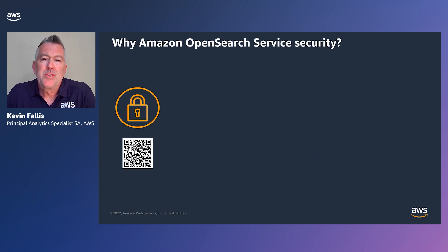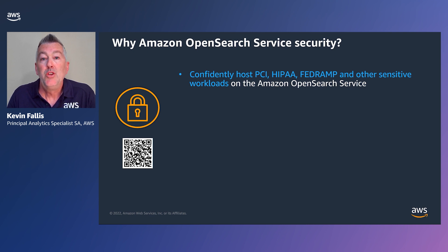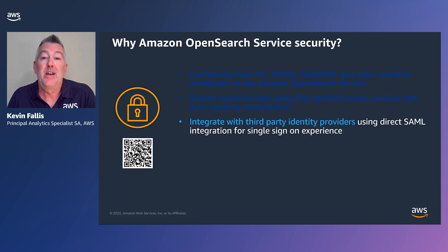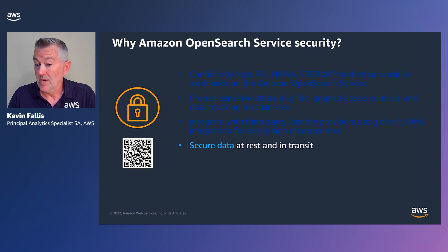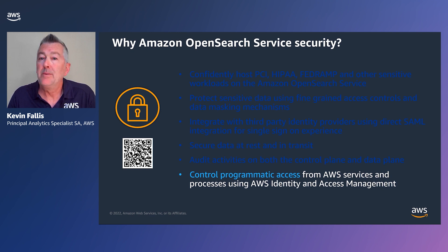So why Amazon OpenSearch service security? First of all, you can confidently host PCI DSS, HIPAA, FedRAMP, and other sensitive workloads on the Amazon OpenSearch service. You can protect sensitive data using fine-grained access control and data masking mechanisms. You can integrate with third-party identity providers for direct SAML integration for a single sign-on experience. You can secure your data at rest and in transit. You can audit activities on both the control plane and the data plane, and you can control programmatic access from AWS services and processes using AWS Identity and Access Management.